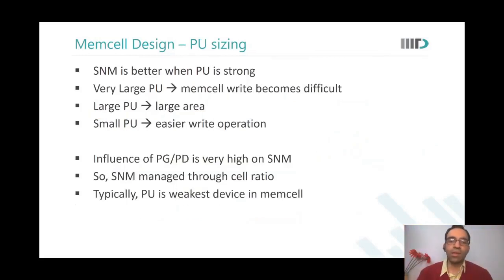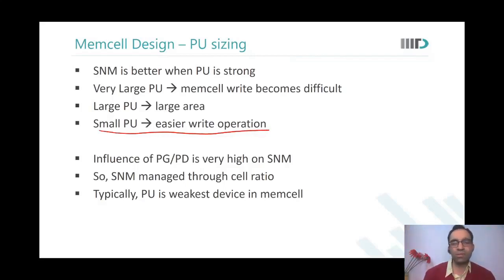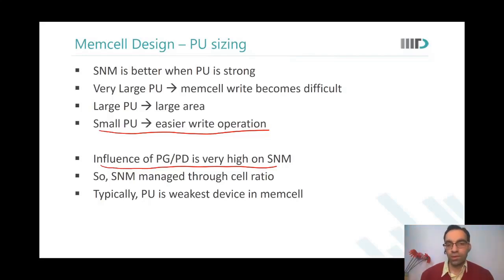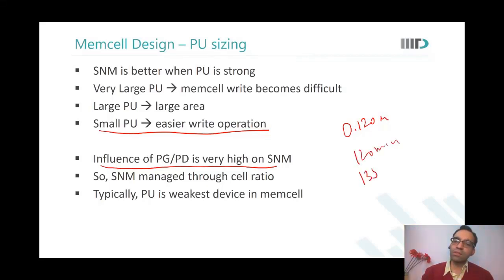For pull up sizing: a small pull up means easier write operation. SNM does not have much role to play here — if we manage the sizing of pull down and pass gate, SNM is largely taken care of. So we want to keep pull up as weak as possible. Pull up is the weakest device in the memory cell. You will probably use a pull up of size 120 nanometers, or if that is not allowed, 135 nanometers — whatever is the minimum width allowed.